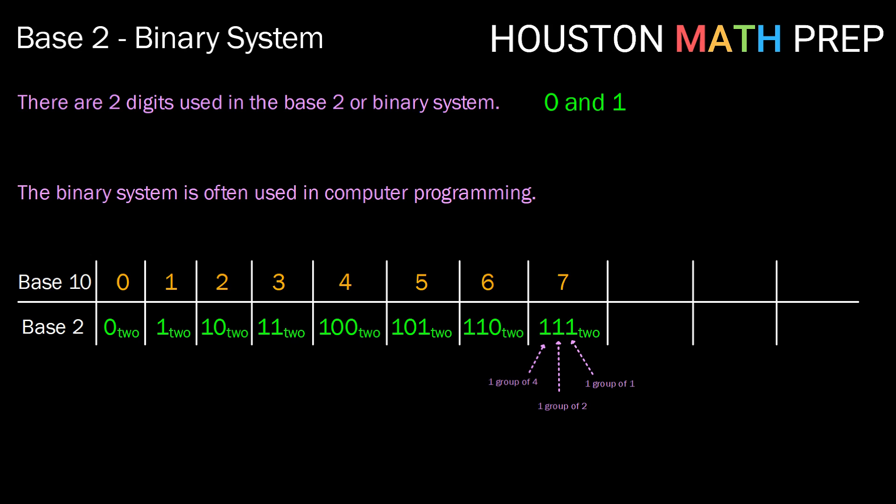When we get to 8, we can think of it as 2 groups of 4, but we need to move to the next place value, counting groups of 8. For 9, we have 1 group of 8 and 1 group of 1. For 10, that's 1 group of 8, 0 groups of 4, 1 group of 2, and 0 groups of 1.